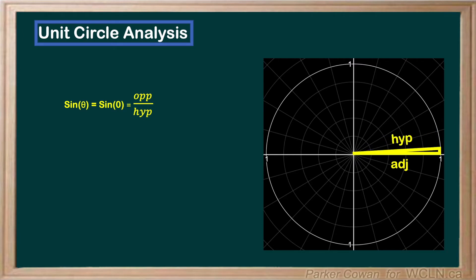As we can see, as the opposite side gets very small, basically 0, the hypotenuse is roughly equal to the adjacent side length.